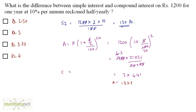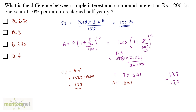Compound interest is equal to amount minus principal, that is 1323 minus 1200, which equals 123. So the difference between simple and compound interest is 123 minus 120, which equals 3. So option B is the correct answer.